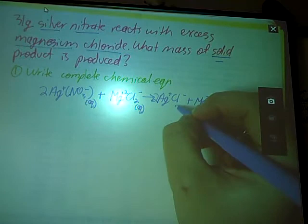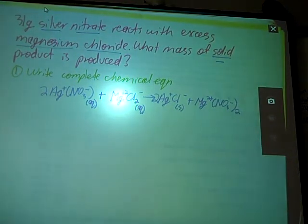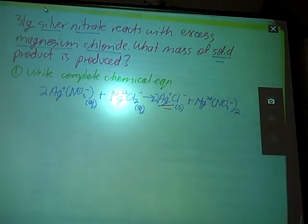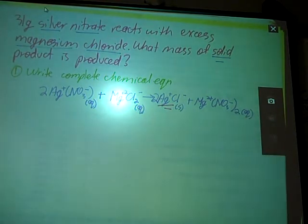Silver chloride is that exception to rule three. So it is not soluble, and this, dear viewer, is the solid product that we're looking for. If there is no solid product, there is no reaction, nothing for you to measure. So this is always the first thing that you need to come up with.